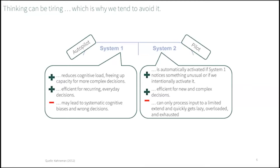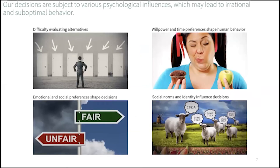Thereby, we can free up our cognitive capacity for the complex decisions for which we really want to rely on System 2 rather than System 1. So, decisions we make are the product of an efficient division of labor between our two mental systems. And in principle, this process yields fair results. This division of labor provides grounds to understand why our decisions are efficient, yet not always rational and perfect.